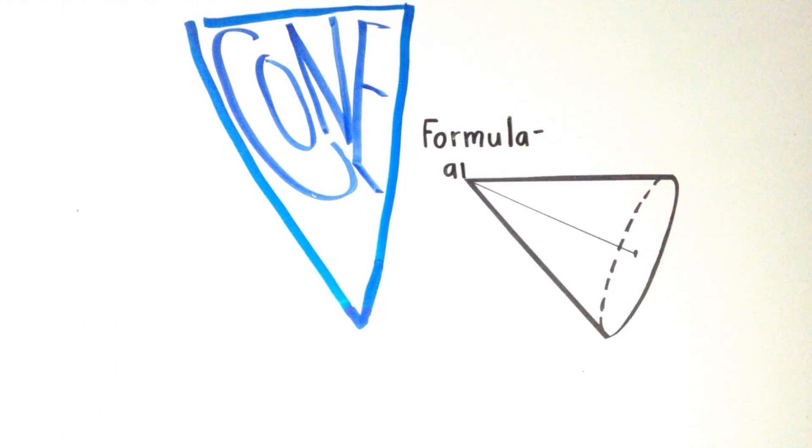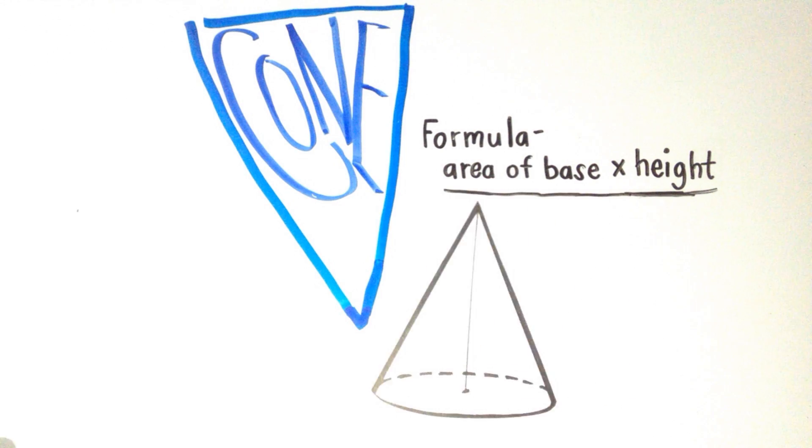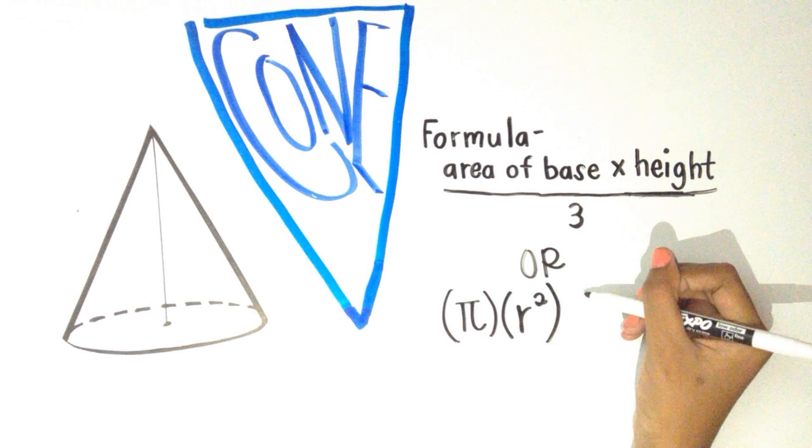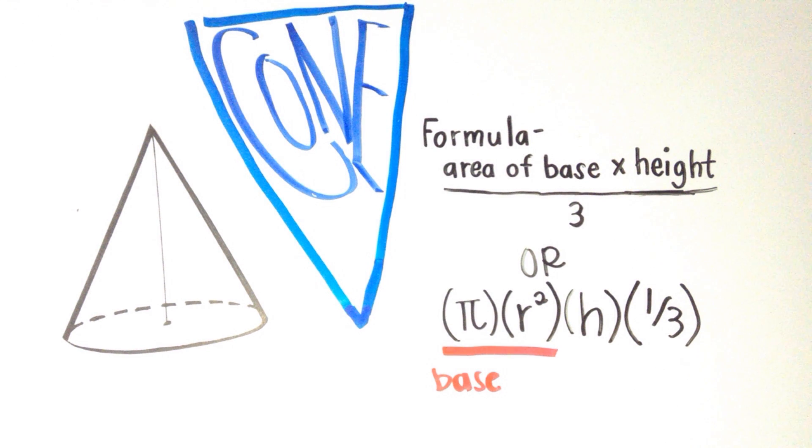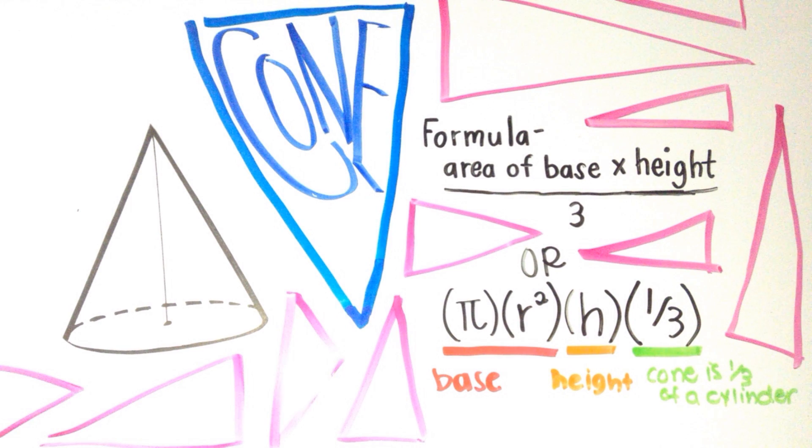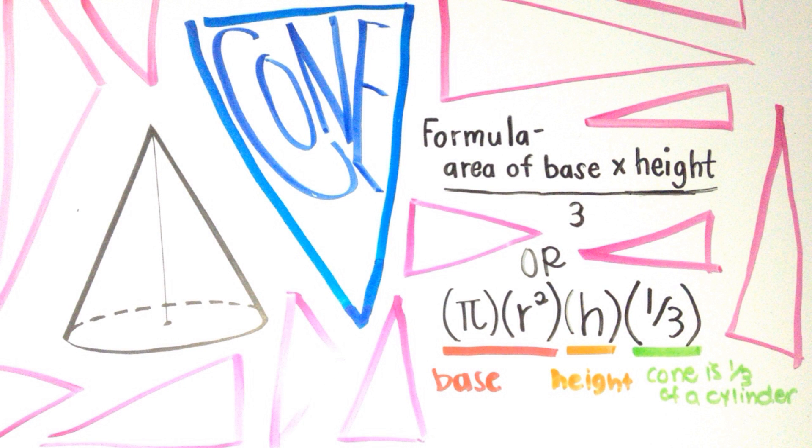volume, you calculate the area of the base times the height, then divide by three. Did you recognize part of the equation? That's the circle's formula: pi times radius squared. This is because the base is once again a circle. You might have noticed it's almost the same as the cylinder, but the cone is one third of the volume. It's kind of like three cones can fit in a cylinder. So what do you get when you